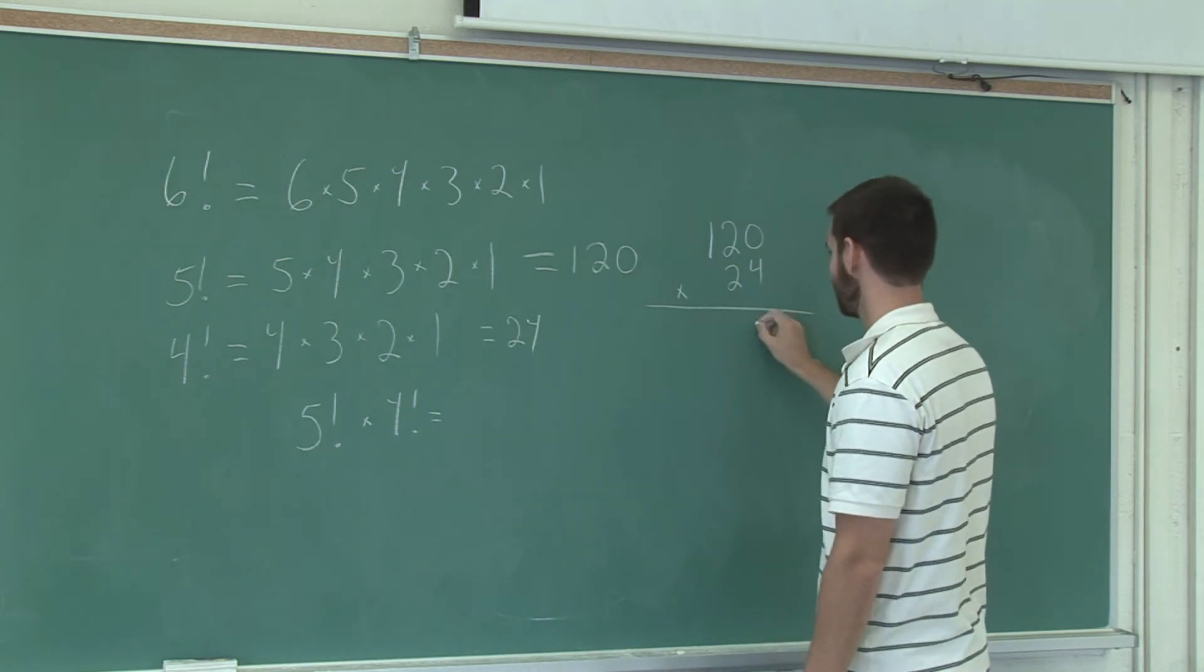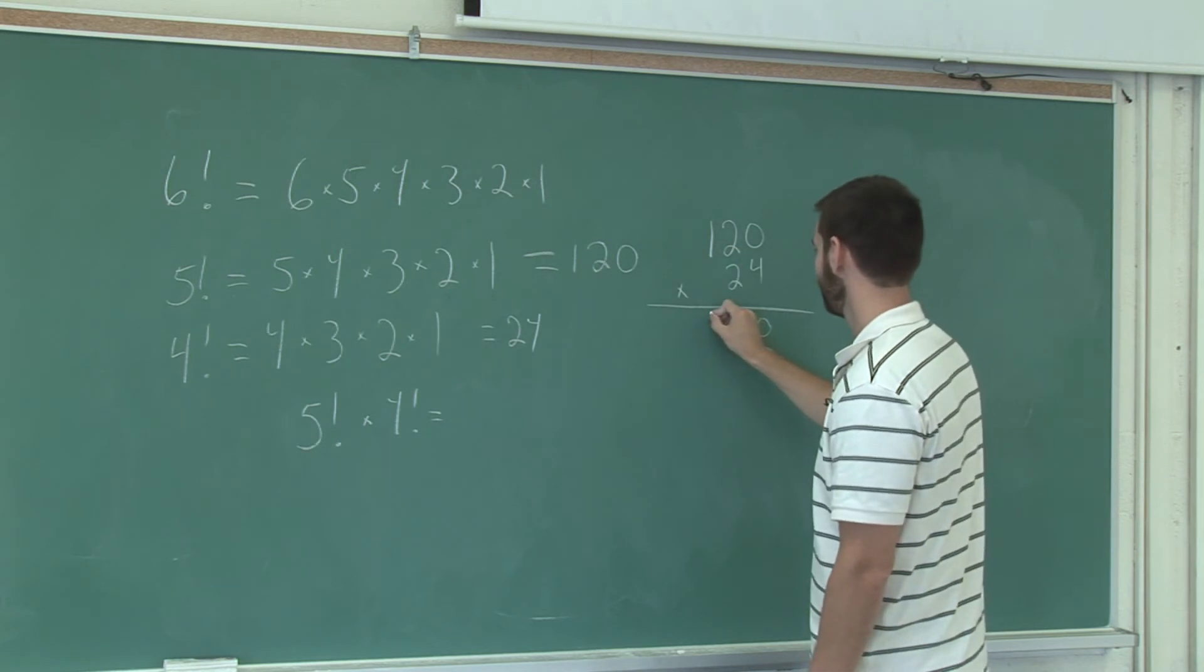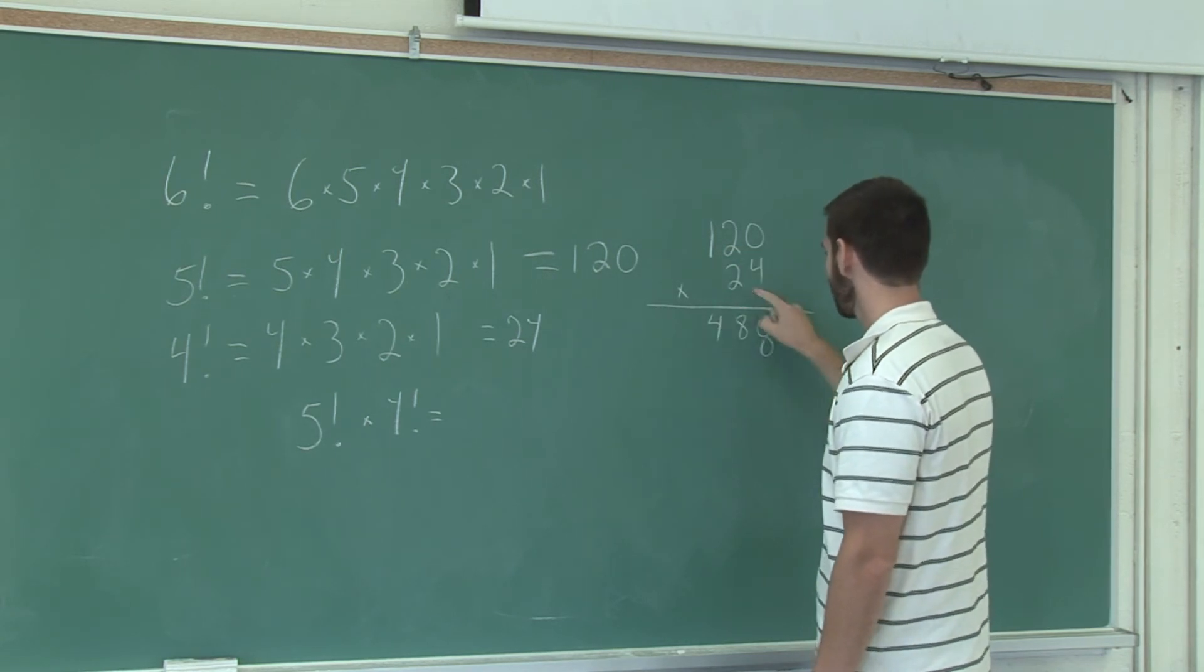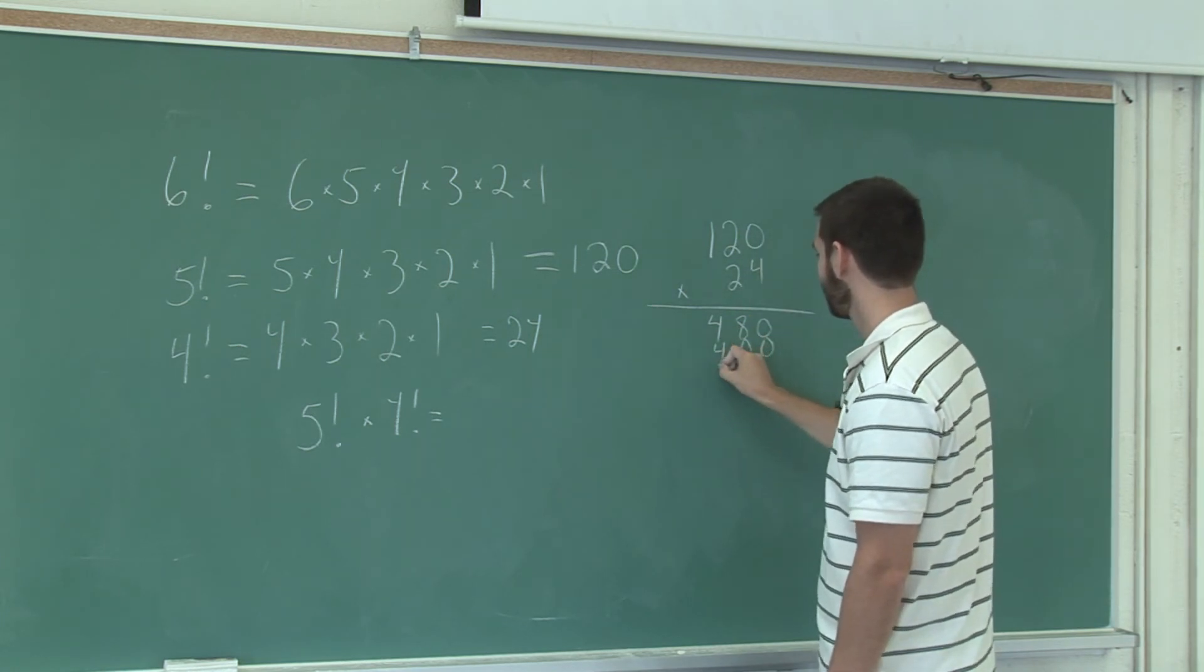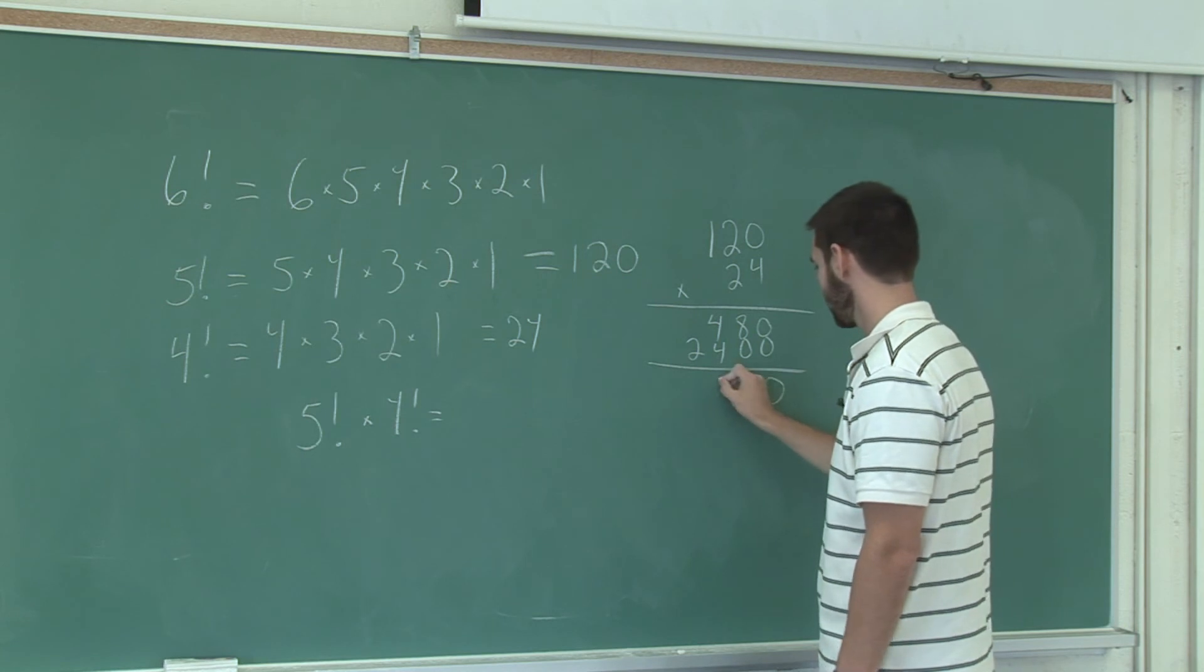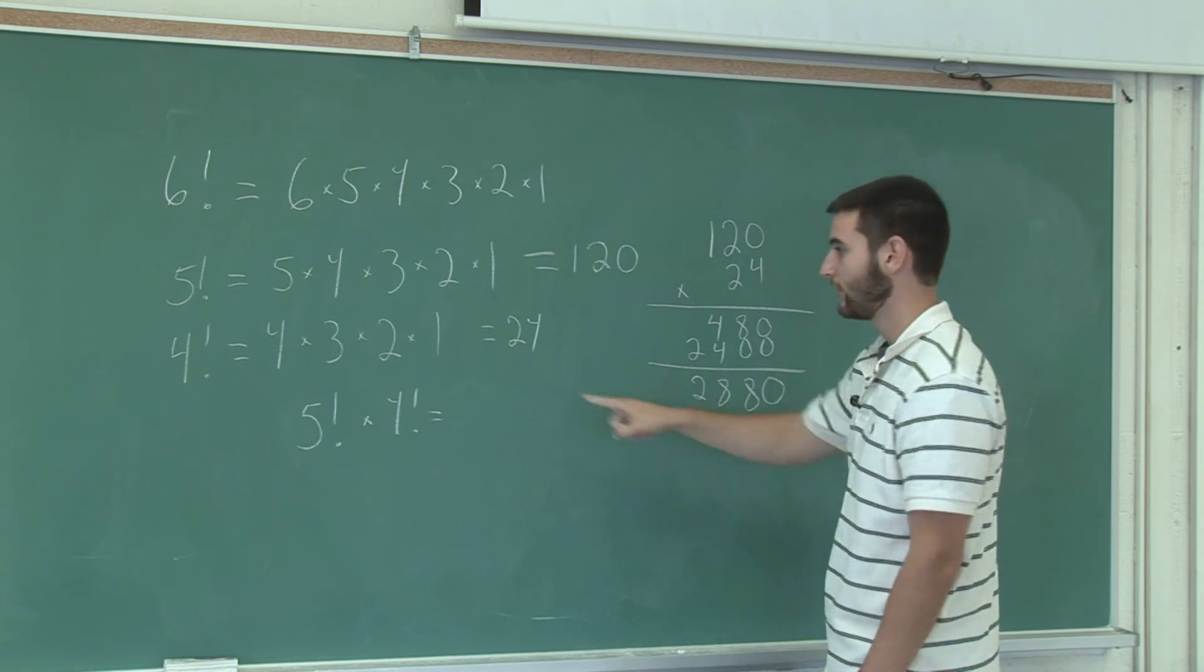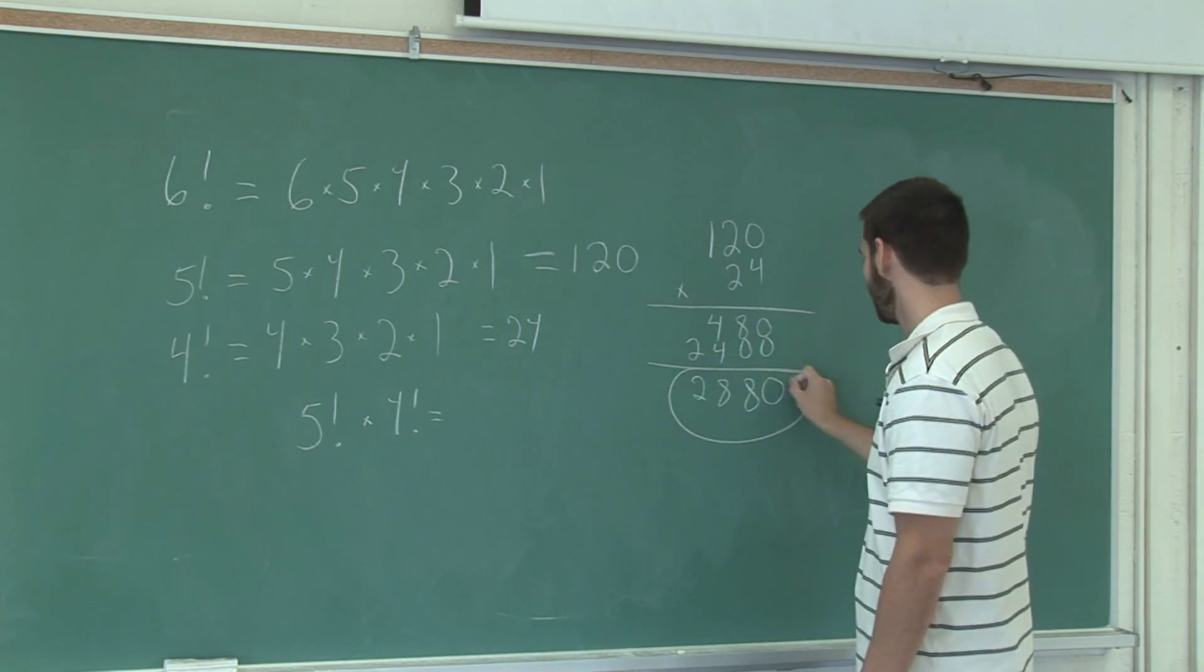4 times 0 is 0. 4 times 2 is 8. Then 1. 2 times 0 is 0. 4. 5 factorial times 4 factorial is 2880.